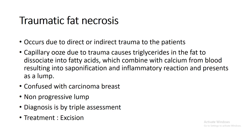Traumatic fat necrosis occurs due to direct or indirect trauma to the breast. Trauma causes rupture of capillaries; capillary ooze causes triglycerides in fat to dissociate into fatty acids, which combine with calcium from blood resulting in saponification. These fatty acids and saponification induce an inflammatory reaction, and later a lump is formed. This lump, like antibioma, is confused with carcinoma of the breast. Diagnosis is by triple assessment — clinical examination, mammography, ultrasonography, and FNAC — and treatment is excision.